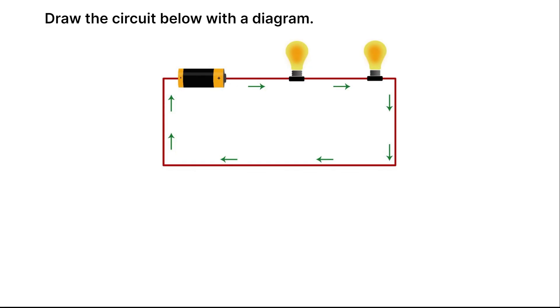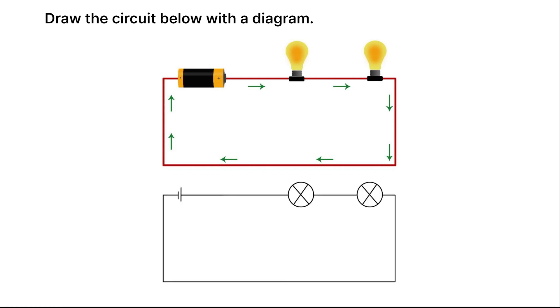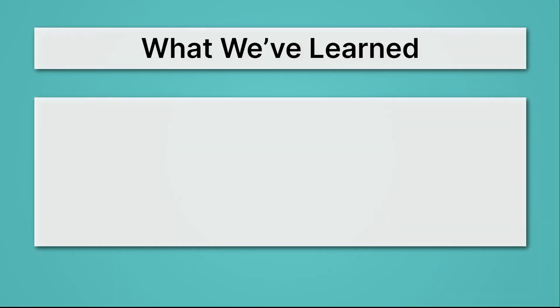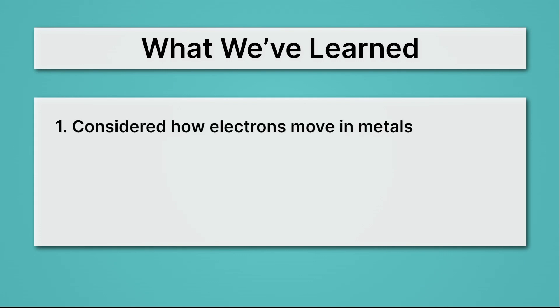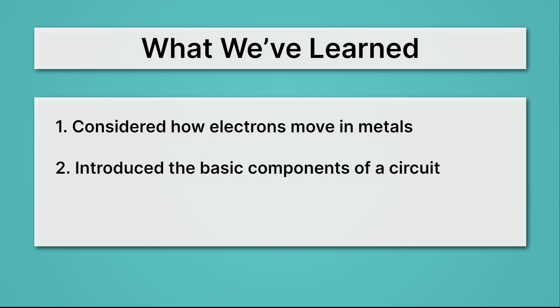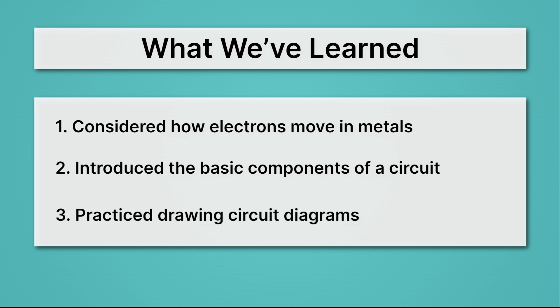Now it's your turn to practice. Here's a circuit diagram with a battery and two light bulbs. Try drawing a circuit diagram on your sheet of paper, then I'll show you the correct answer. This is what your circuit diagram should look like — it has a battery and then two circles with the crosses representing our light bulbs. One improvement you might make to this circuit? If you said a switch, that would be a good idea. Let's review what we've learned: electrons in metals are free to roam, and a battery takes advantage of that. We introduced basic components like a voltage source, a resistor, a light bulb, and a switch — and we practiced drawing circuit diagrams.